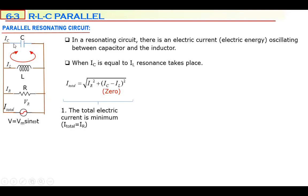This is logical because the current is continuously oscillating between L and C. L and C do not take any more current from the generator. The generator only supplies current to the resistor, which is I-total equals only IR.